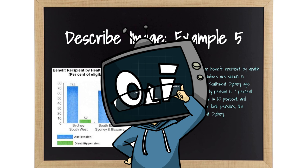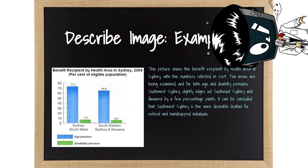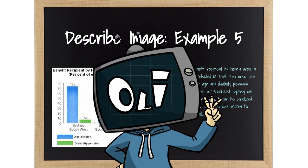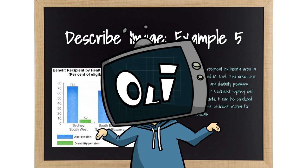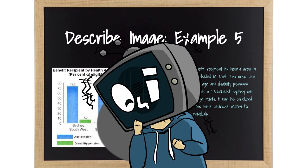Ready for my last flex? Here we go. This picture shows the benefit recipient by health area in Sydney, with the numbers collected in 2004. Two areas are being examined, and for both age and disability pensions, Southwest Sydney slightly edges out Southeast Sydney and Illawarra by a few percentage points. It can be concluded that Southwest Sydney is the more desirable location for retired and handicapped individuals. Again, purely show off here, no need to ever go for this level of complexity. You are encouraged to try, but if you fail miserably during the test, that's on you.